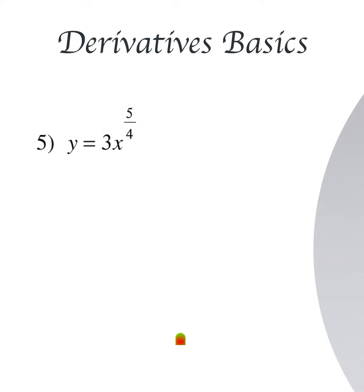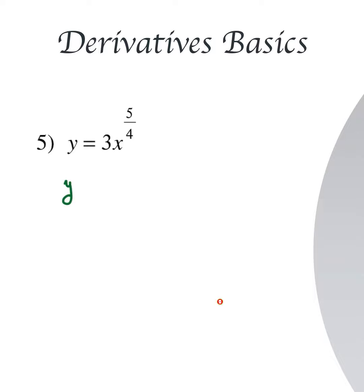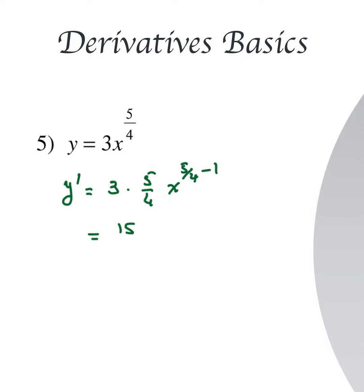Here we have y equal to 3x to the power 5/4. So dy/dx, or y prime, equals: keep the 3, drop down 5/4 and multiply, giving 3 times 5/4 times x to the power (5/4 minus 1). That gives us 15/4 times x to the power 1/4, and that is the final answer.